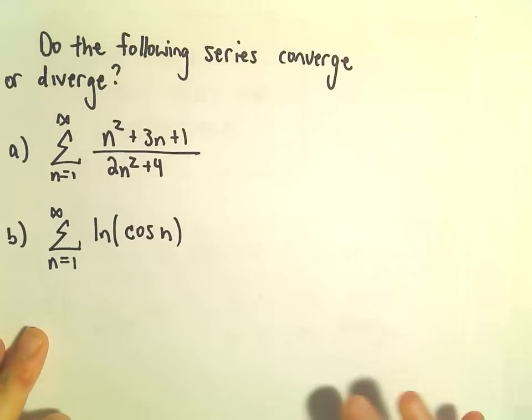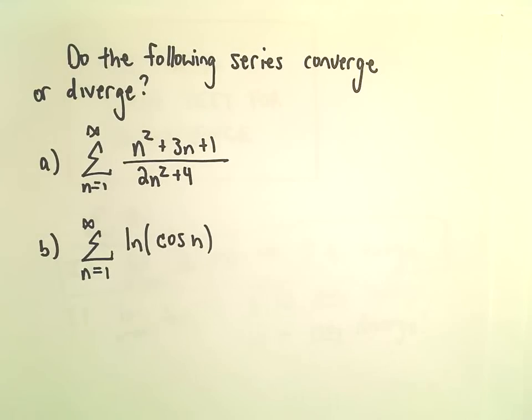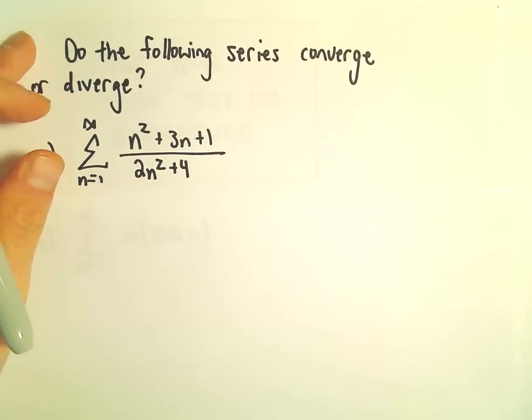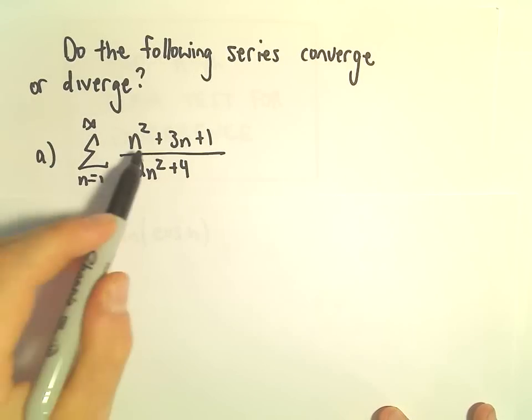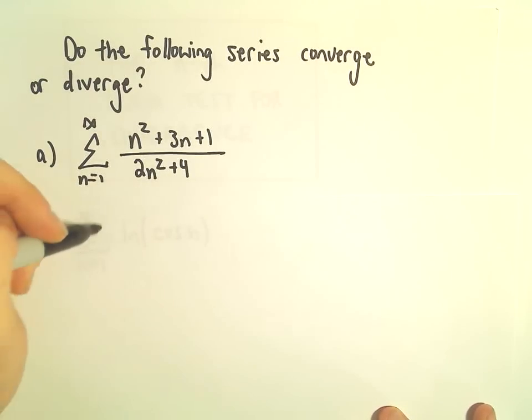So here we want to figure out, do these following series converge or diverge? For part A here, we've got the series from n equals 1 to infinity, n squared plus 3n plus 1 over 2n squared plus 4.